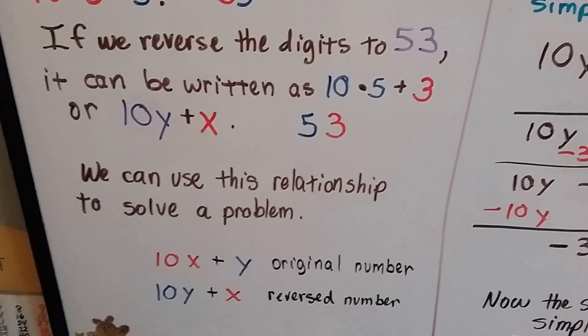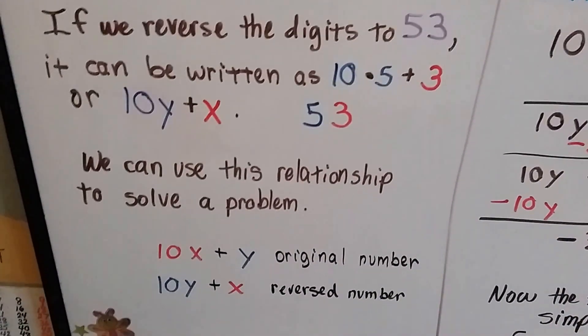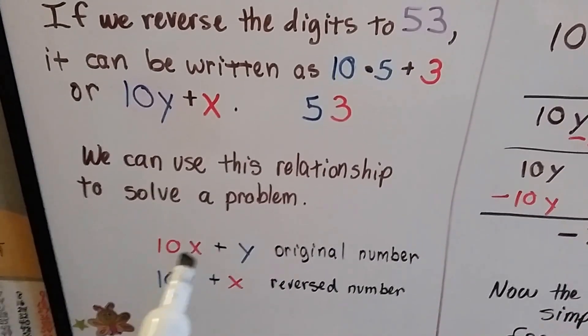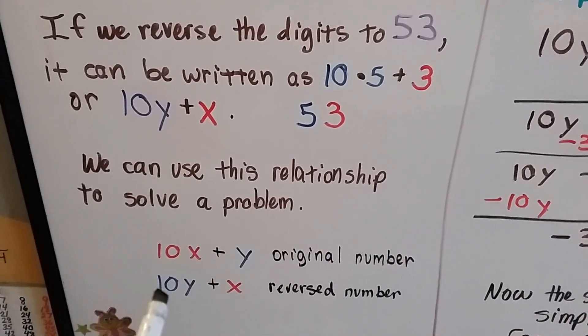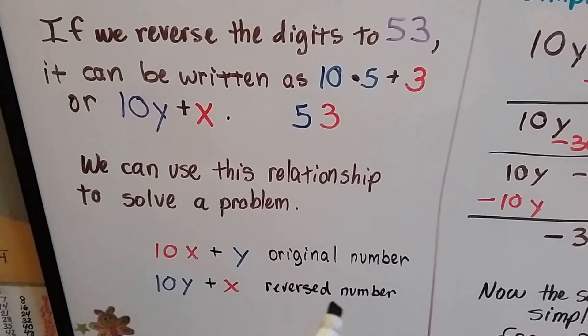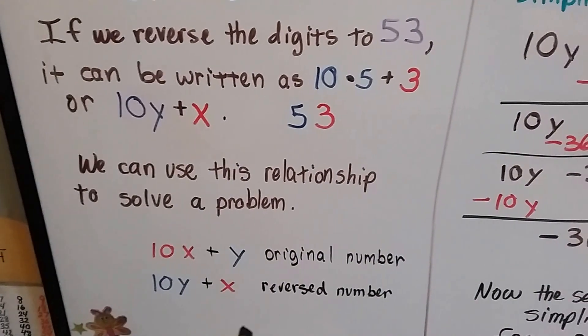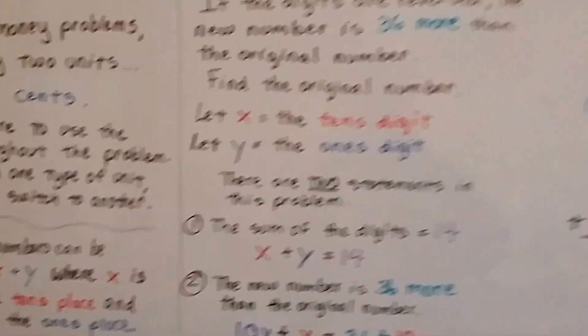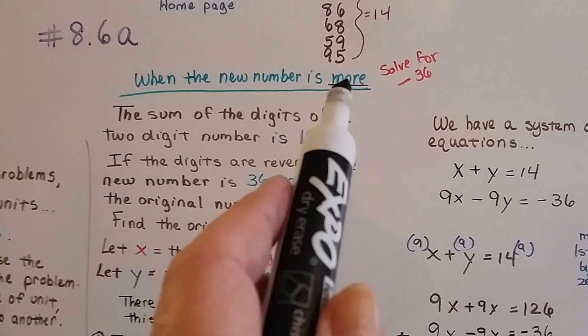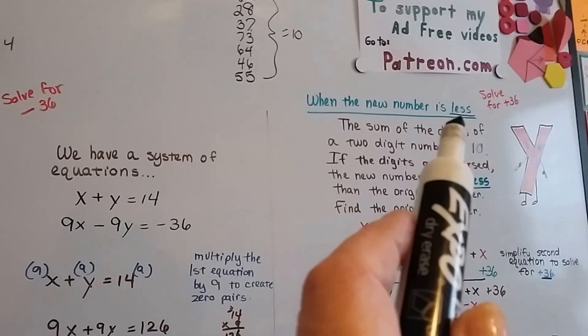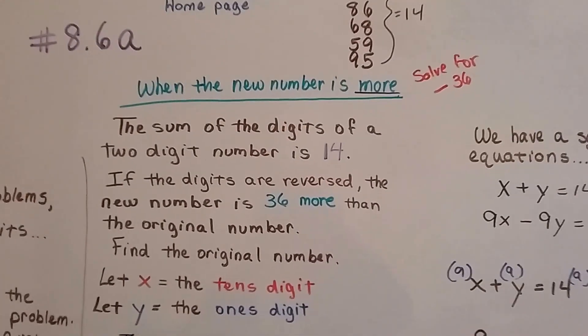We can use this relationship to solve a digit problem. So we could have 10x plus y as the original number, and 10y plus x as the reversed flipped around number. There are two types of problems: one where the new number is more than the original number, and one where the new number is less than the original number.